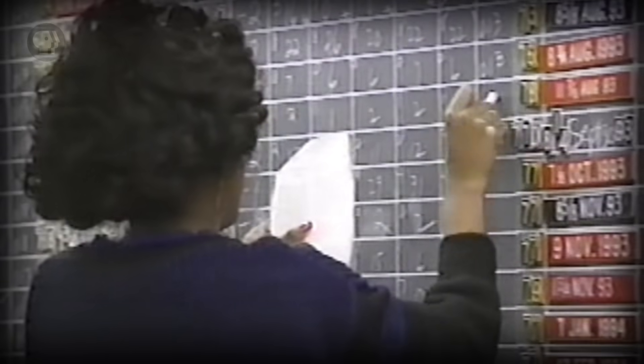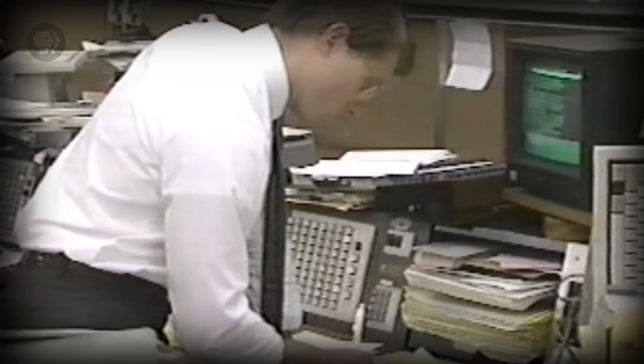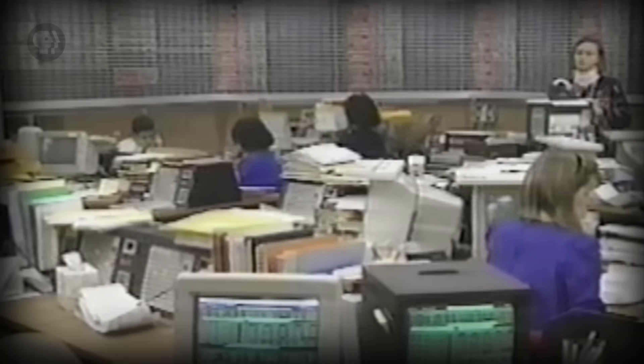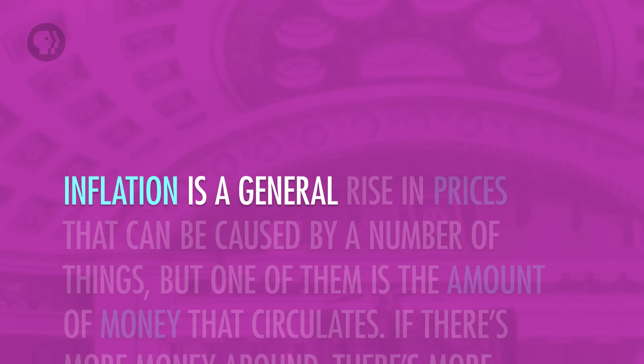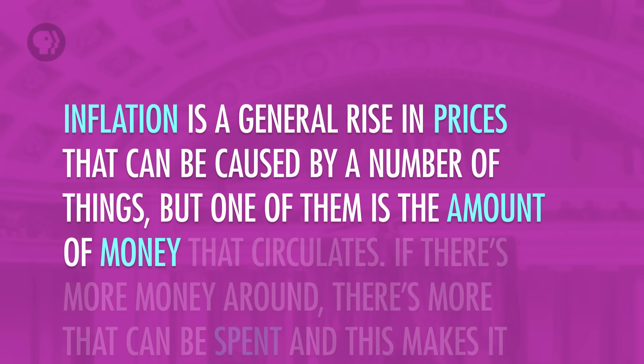There's at least one more important way that the Fed influences the money supply in the U.S., and that's through open market operations. This is a fancy way to say that the Fed buys and sells government debt in the form of treasury bills, or government bonds. When the Fed sells bonds, it takes money out of the economy, and when it buys them, more money goes into the economy. This is the idea behind what is known as quantitative easing, which is really complicated. I have to mention inflation at this point. Inflation is a general rise in prices that can be caused by a number of things, but one of them is the amount of money that circulates.